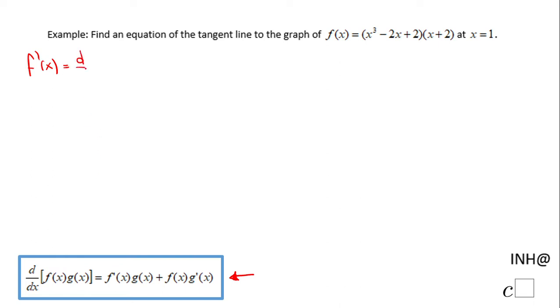So f prime of x in this case will be the derivative with respect to x of the first function in the product, which is x³ - 2x + 2, times the second function in this product, which is x + 2. So we finish with the first part of the product rule.